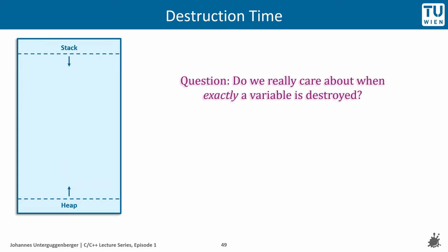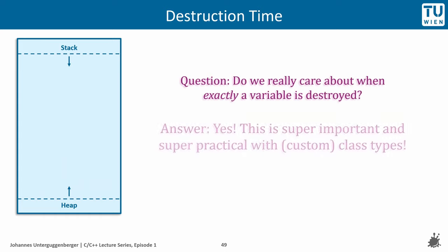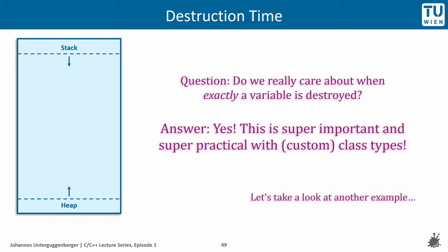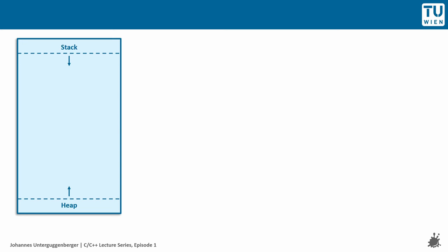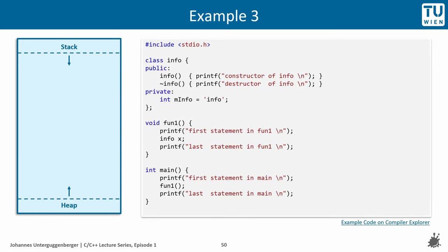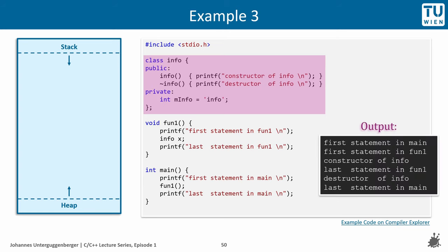One question you might ask is, do we really care about when exactly a variable is destroyed? And the answer is yes, we do. In fact, this is very important and can be put to good use in your programs. Let us take a look at another example, which uses a custom C++ class. The class info is just a very small type, storing only one integer variable, and it prints in its constructor and in its destructor some messages. The output of this code is exactly like shown here.